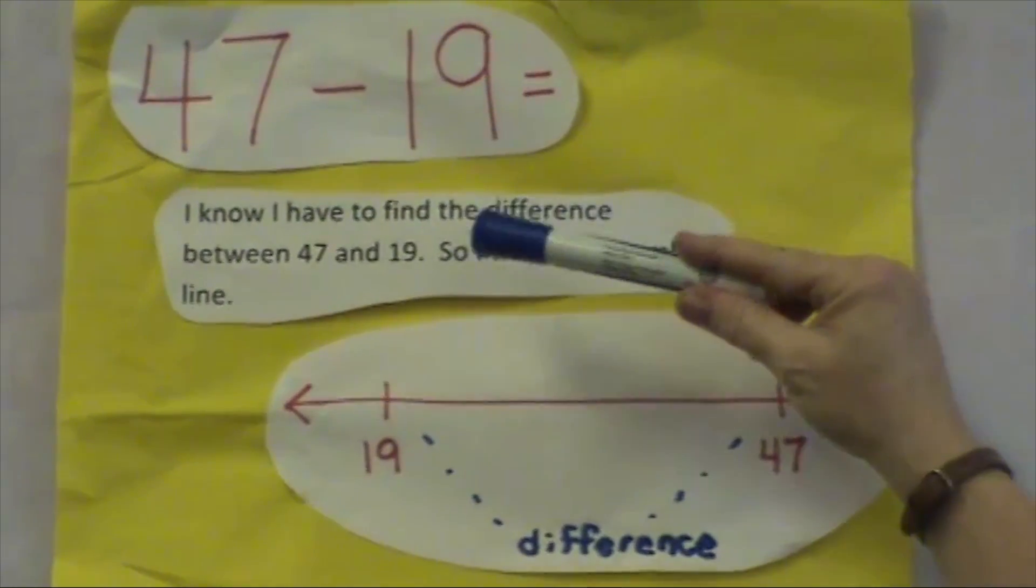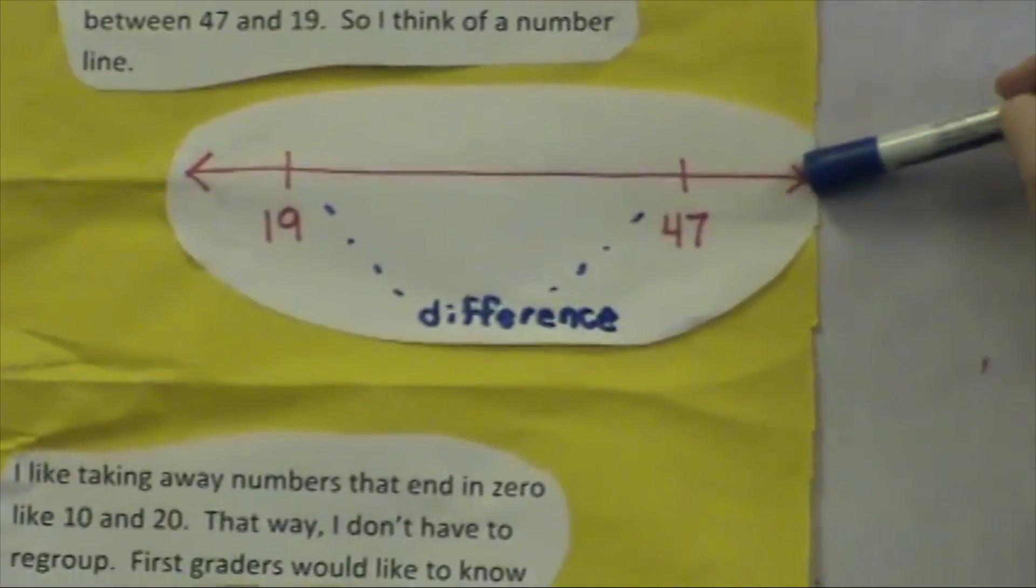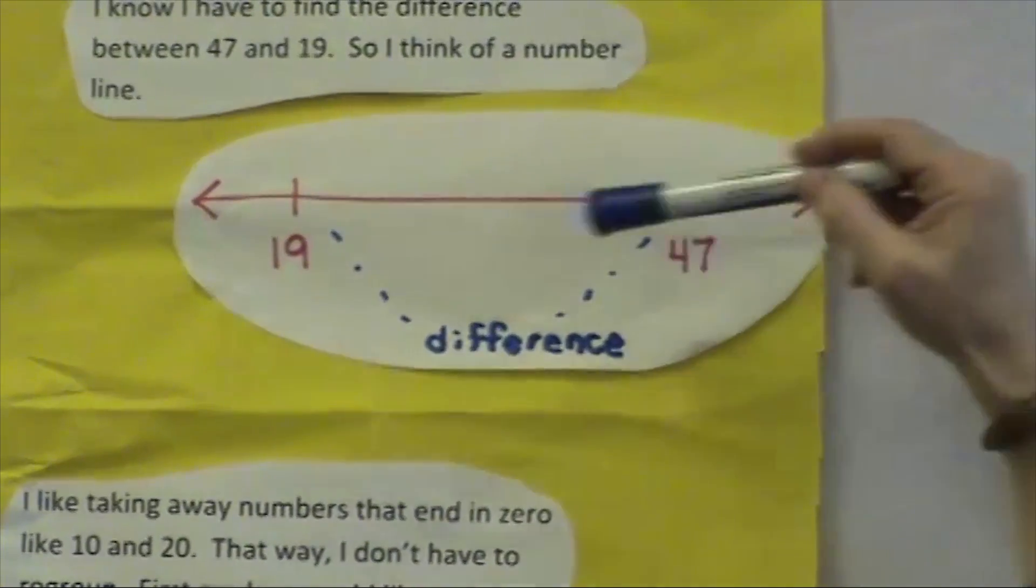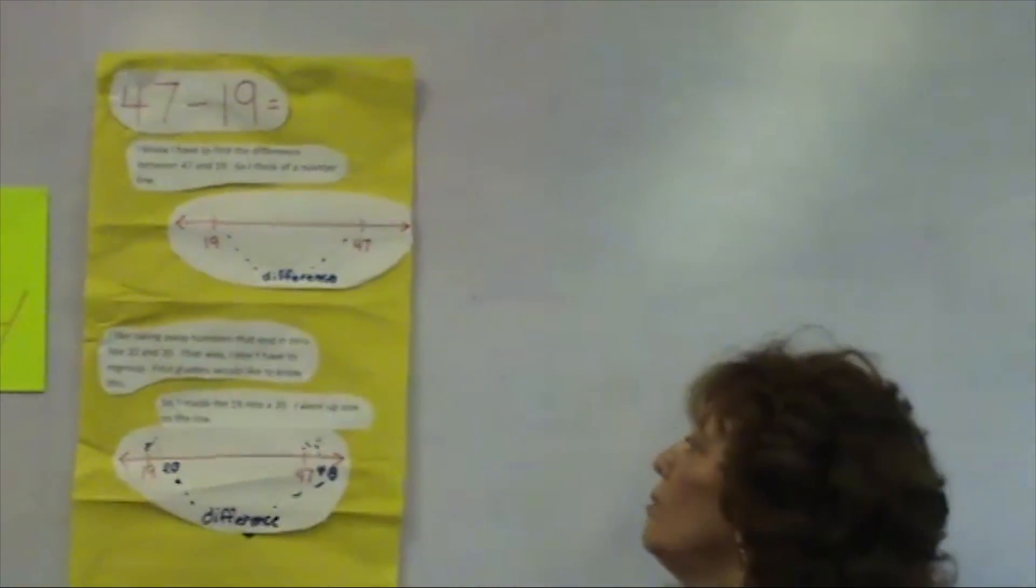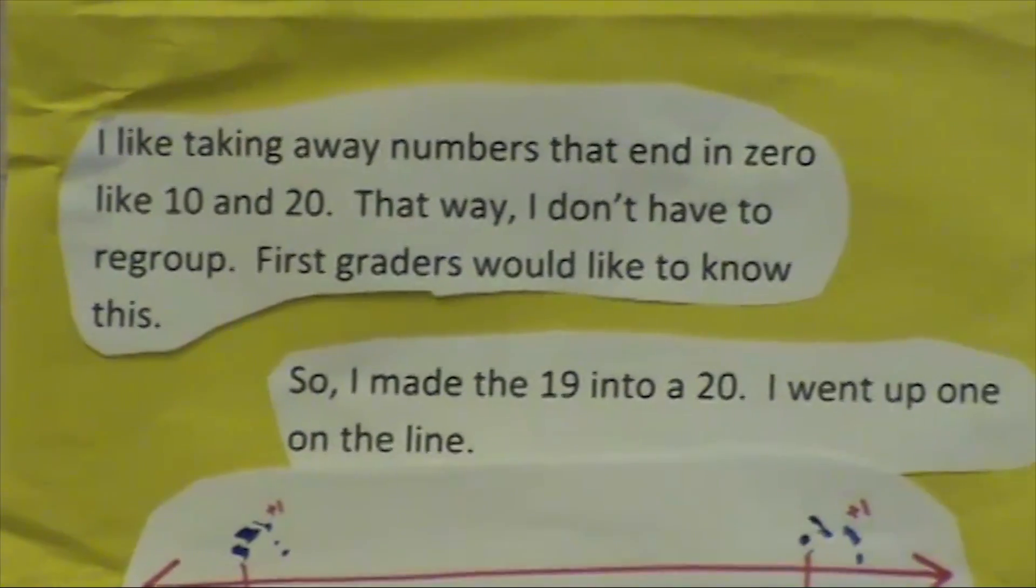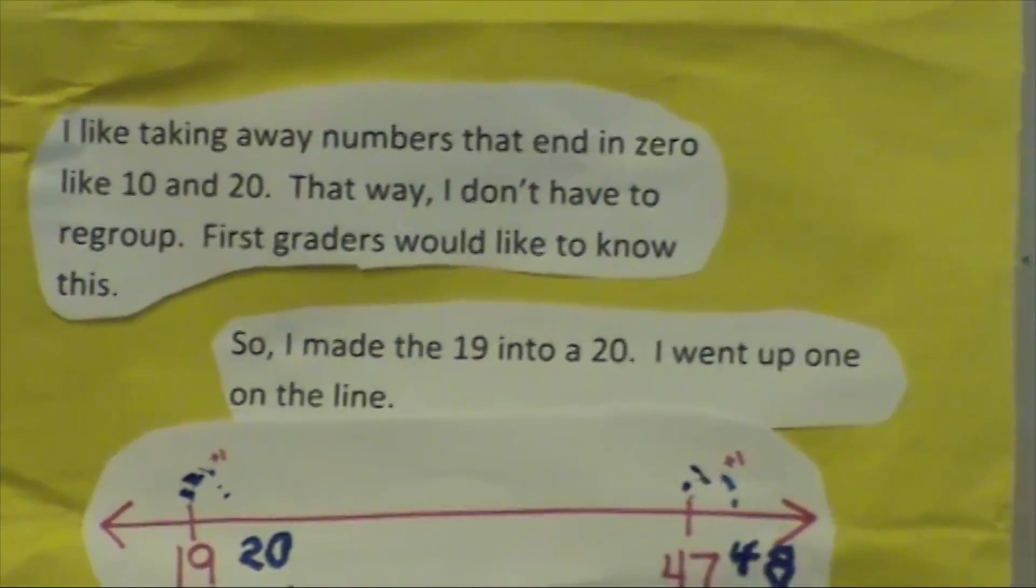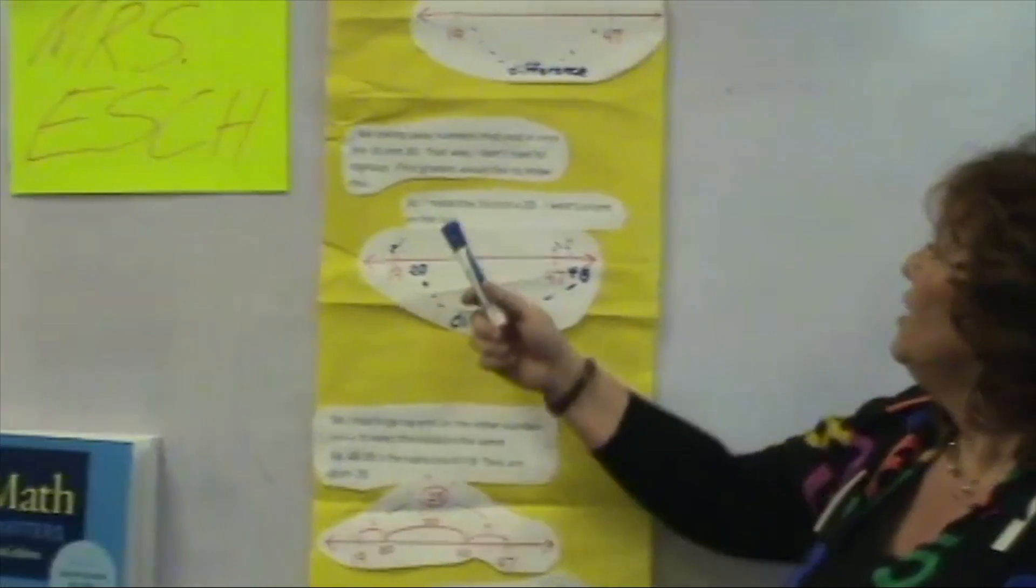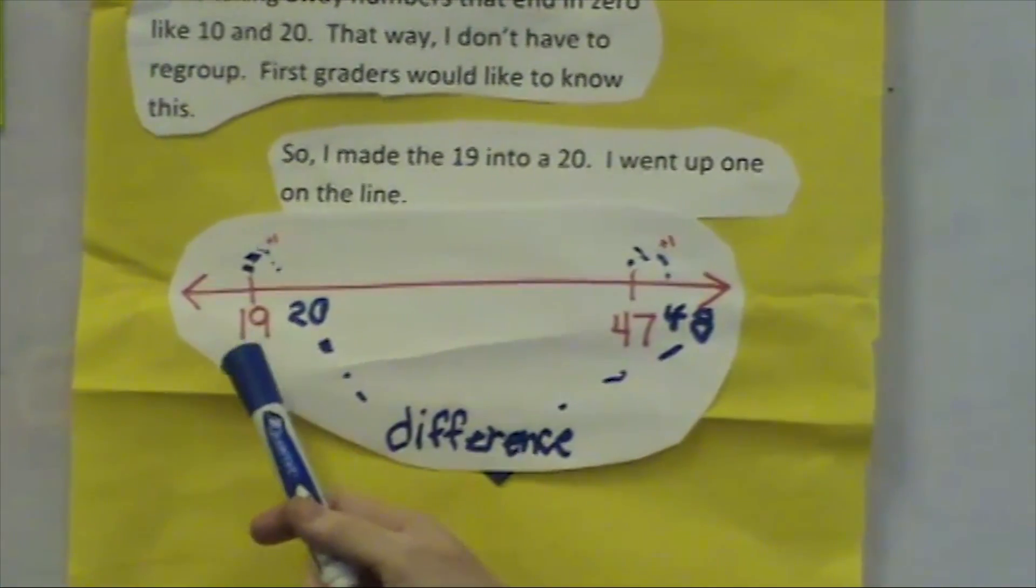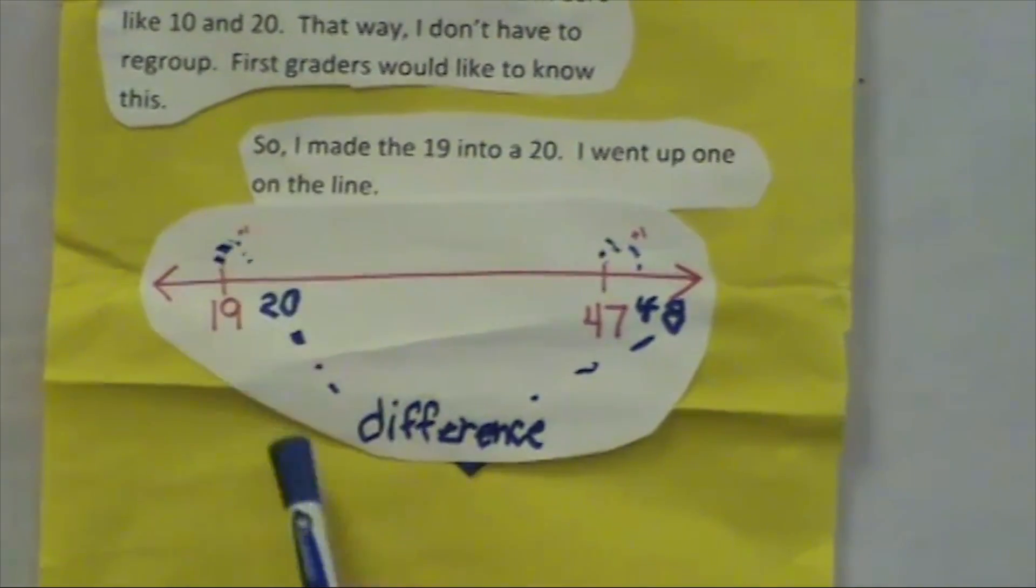And this is what the student said. I know I have to find the difference between 47 and 19, so I think of a number line. So, I actually drew the number line on the whiteboard, and later on we transferred it. And the student did say he was finding the difference between the two numbers. And then the student continued, I like taking away numbers that end in 0 like 10 and 20. That way I don't have to regroup.